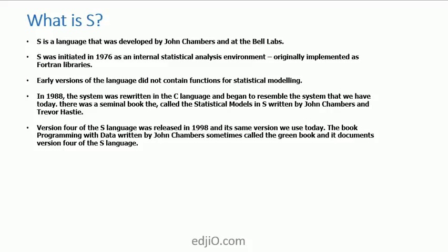What is S? S was a language — in fact, is a language — that was developed by John Chambers when he was at Bell Labs. It was initiated in 1976 as an internal statistical analysis environment, an environment that people at Bell Labs could use to analyze data. Initially, it was implemented as a series of Fortran libraries to implement routines that were tedious to do over and over again.